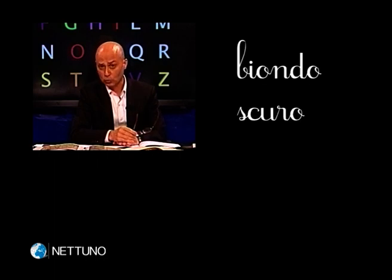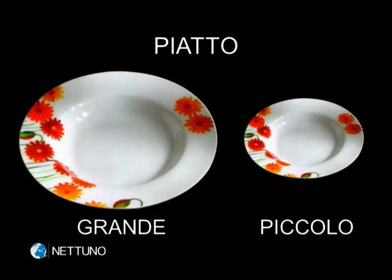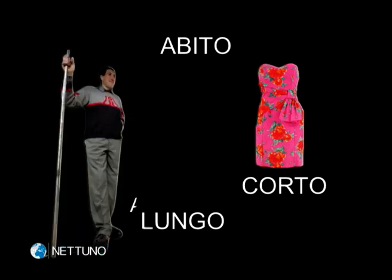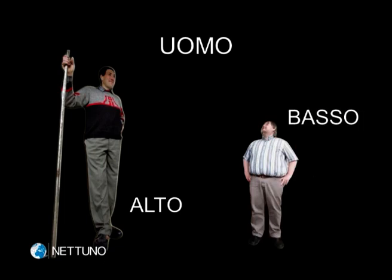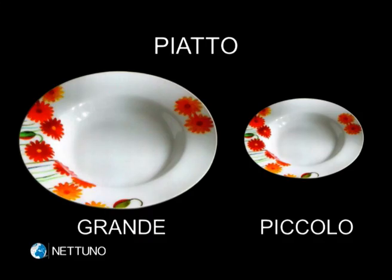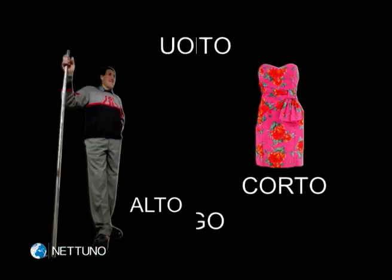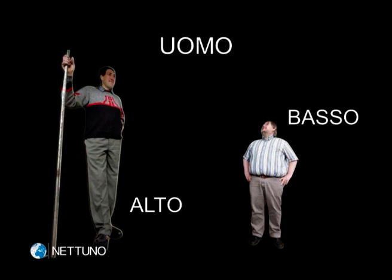Le parole biondo e scuro sono aggettivi. Vediamo ora queste immagini. Qui c'è un piatto grande e c'è un piatto piccolo. Qui c'è un abito lungo e c'è un abito corto. Qui c'è un uomo alto e c'è un uomo basso. Gli aggettivi accompagnano i nomi: grande, piccolo, lungo, corto, alto, basso — sono aggettivi.